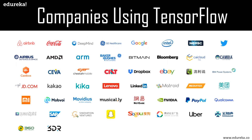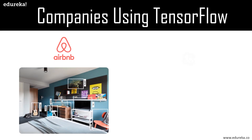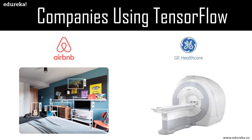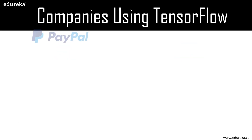TensorFlow is being used by many companies across industries. Airbnb, the leading global online marketplace and hospitality service, applies machine learning using TensorFlow to classify images and detect objects at scale, helping to improve the guest experience. In healthcare, GE Healthcare is training a neural network using TensorFlow to identify specific anatomy during brain MRI exams, helping improve speed and reliability.